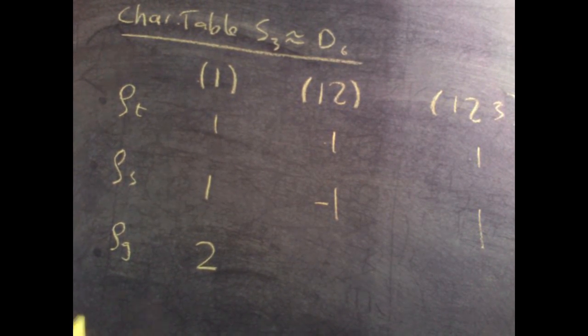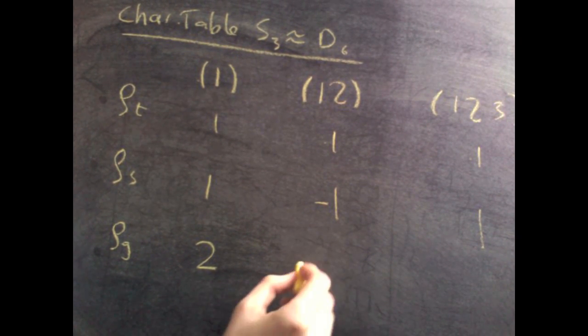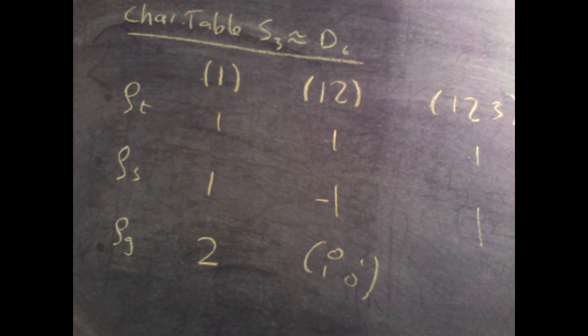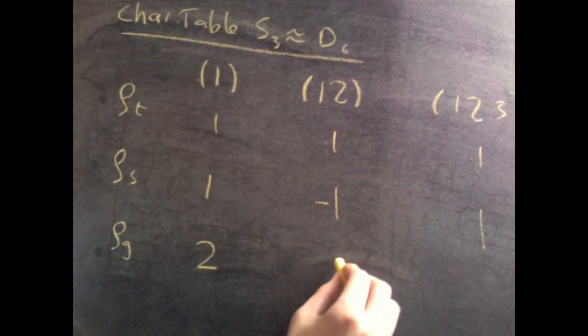Then, rho g sent the 2-cycle to this matrix, 0, 1, 1, 0, which has trace equal to 0.